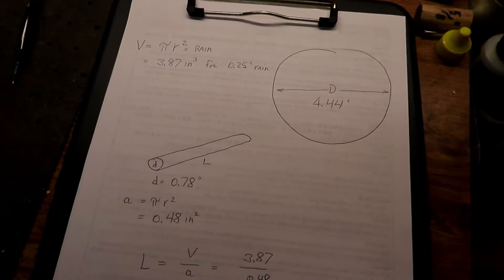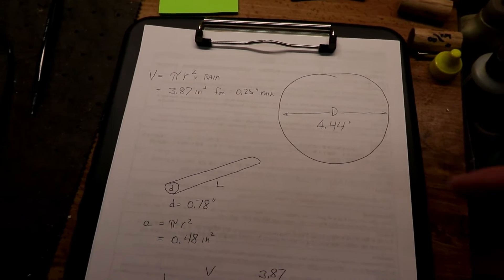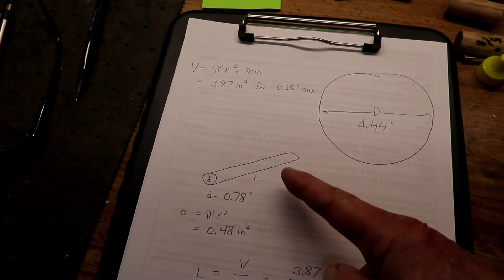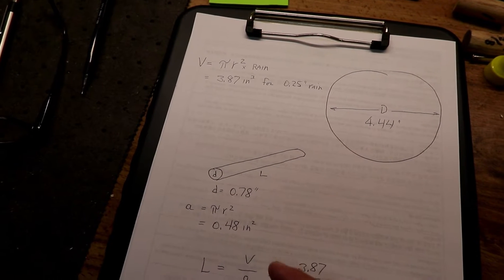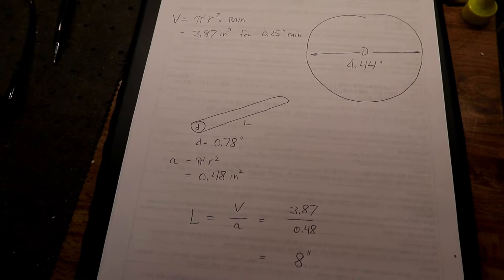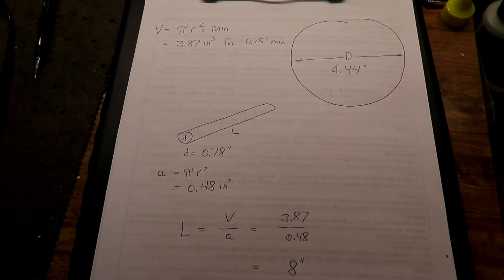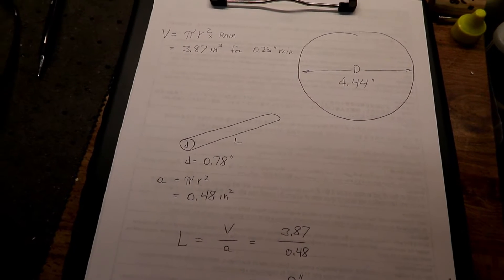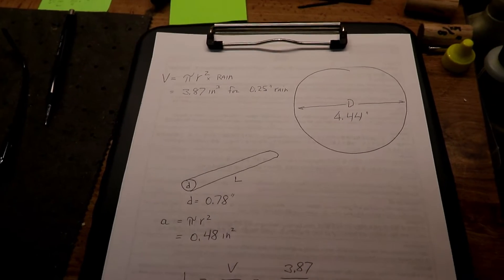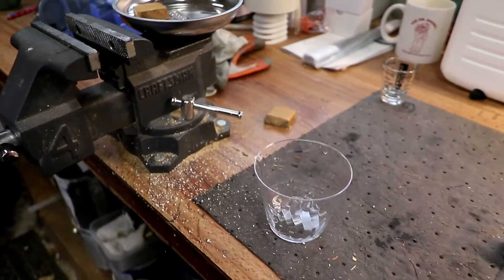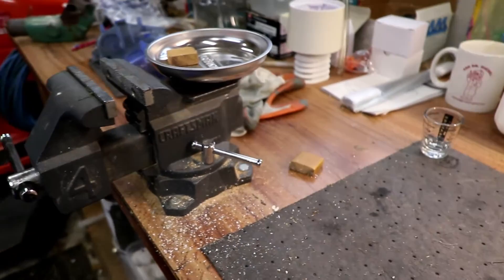Looking at the catchment area and figuring out the area and the volume, and then coming down to the pipe and figuring how much pipe you need in order to equal the volume that falls into that catchment basin when your catchment area has a 0.25 inch rainfall.